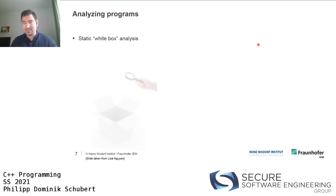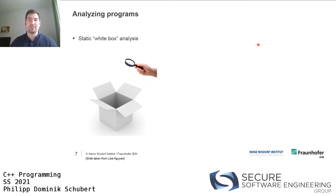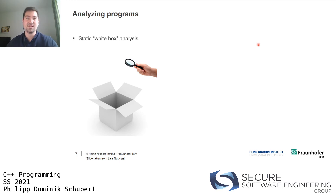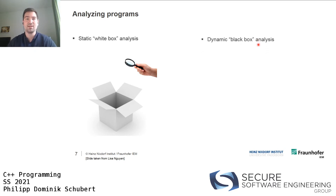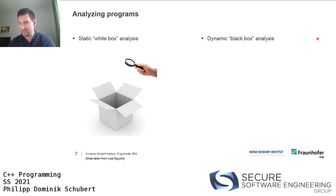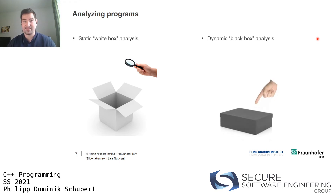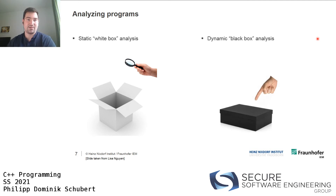There are different approaches to analyzing programs. Static analysis is white-box analysis - it has access to everything, typically all your source code including configuration files. Black-box analysis, on the other hand, typically doesn't have source code - you only have an executable binary and don't know anything else about it.